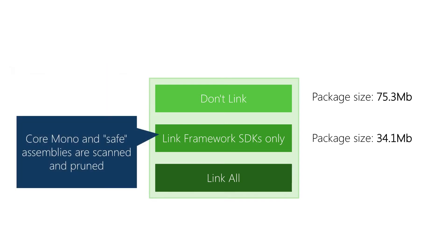By default, release builds always link the SDK assemblies — these are the framework assemblies that include the .NET framework and the runtime. This switch includes what we refer to as 'safe to link' assemblies, which have an assembly-level attribute indicating they should be evaluated by the linker. This almost always works just fine because those assemblies have been built to ensure the necessary code is always preserved. So you should at a minimum always link the SDK assemblies, removing the parts you're not using, which will reduce your application package size.